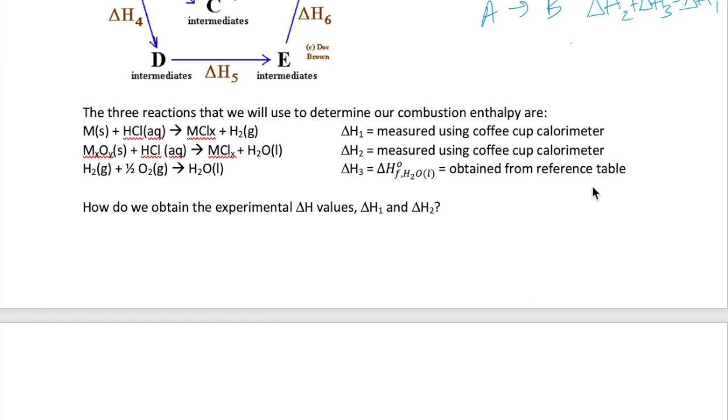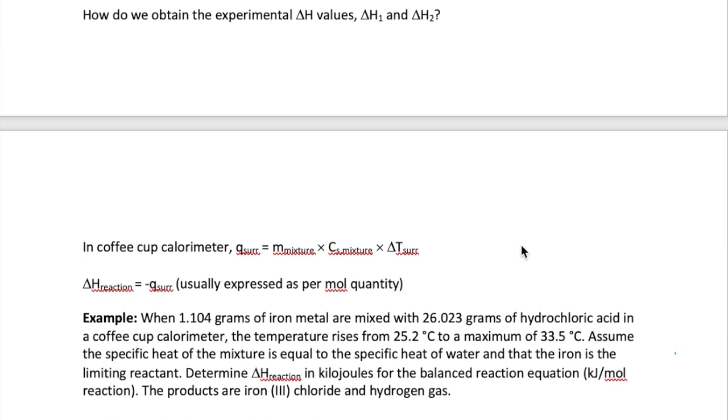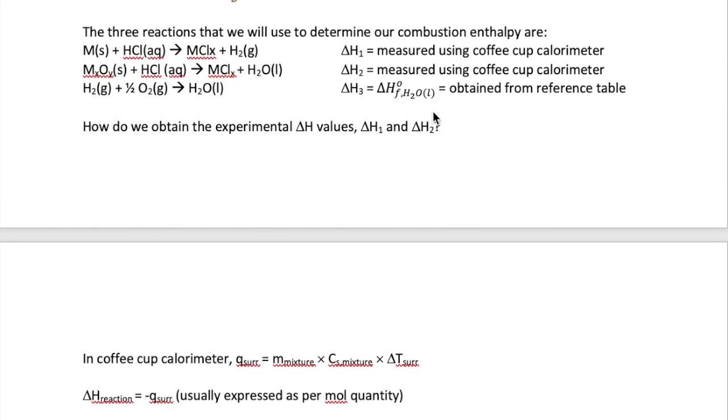So let's discuss how we obtain the experimental values of delta H using the coffee cup calorimeter, in other words, the values of delta H1 and 2.